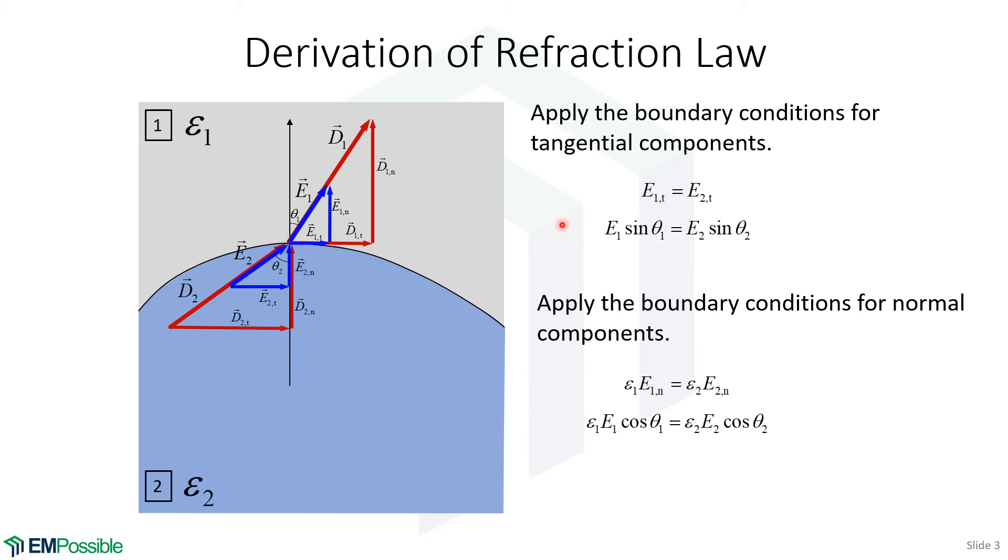So we now have two equations. This first one came from the boundary condition for tangential components, and the second one came from the boundary conditions for the normal components.